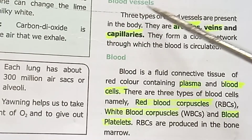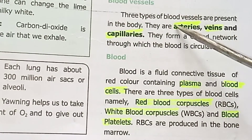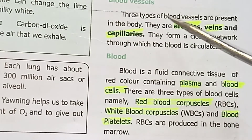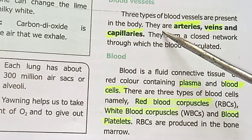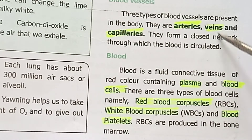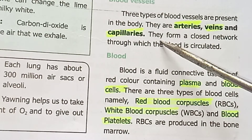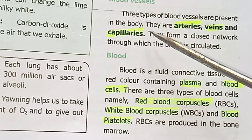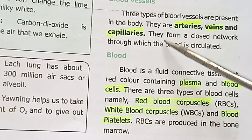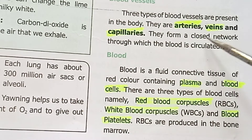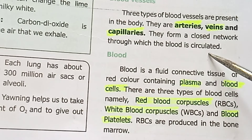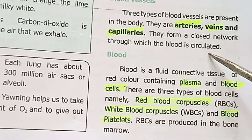There are three types of blood vessels present in the body: arteries, veins, and capillaries. They form a closed network through which blood is circulated. Blood is a fluid connective tissue of red color containing plasma and blood cells.